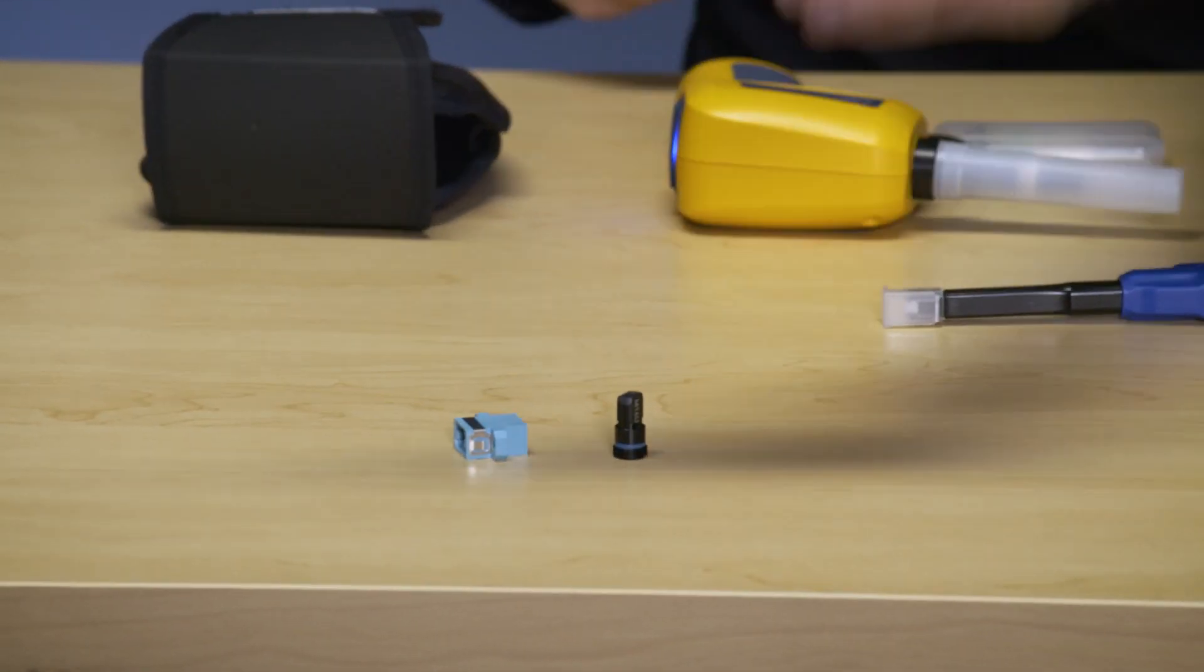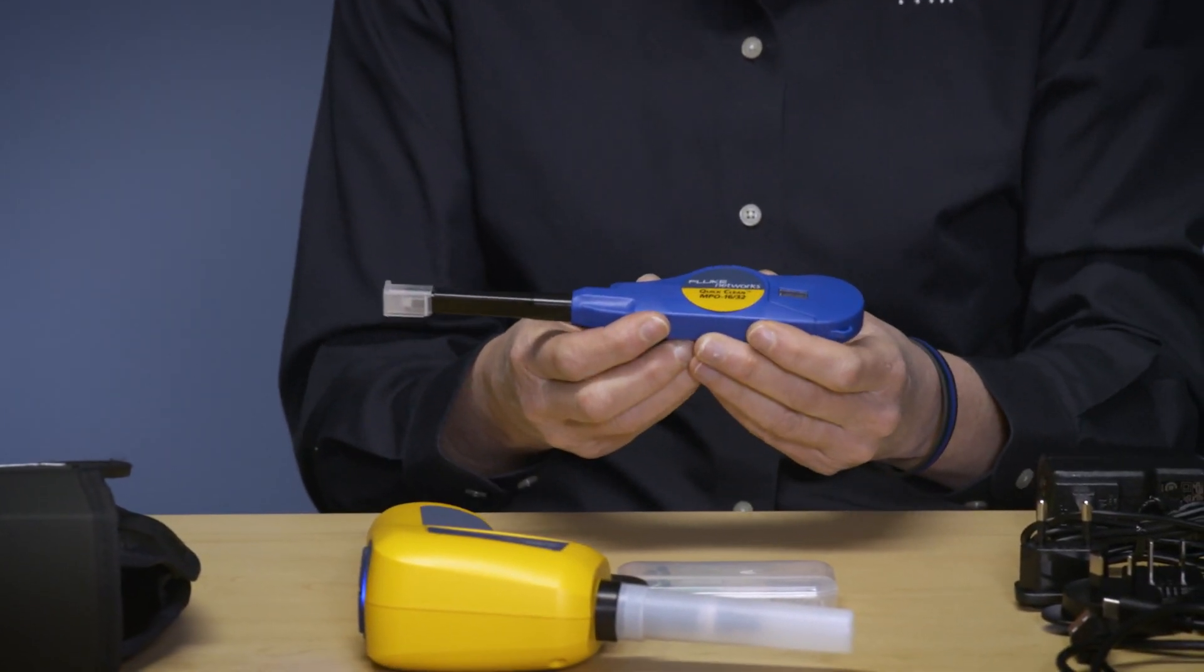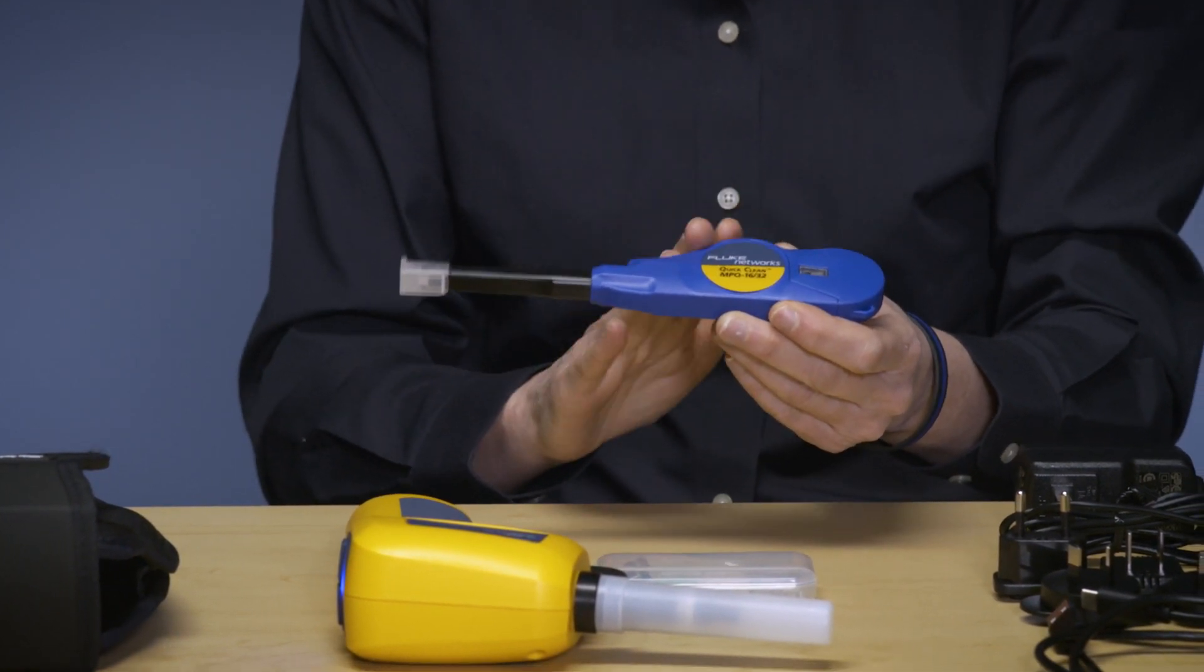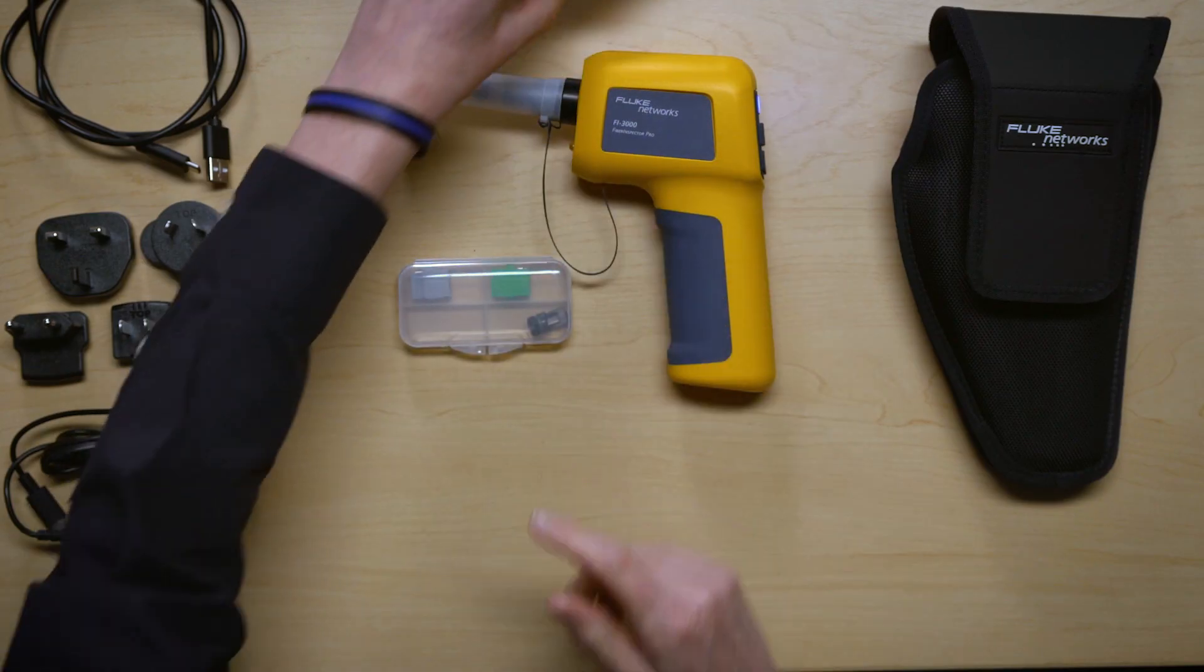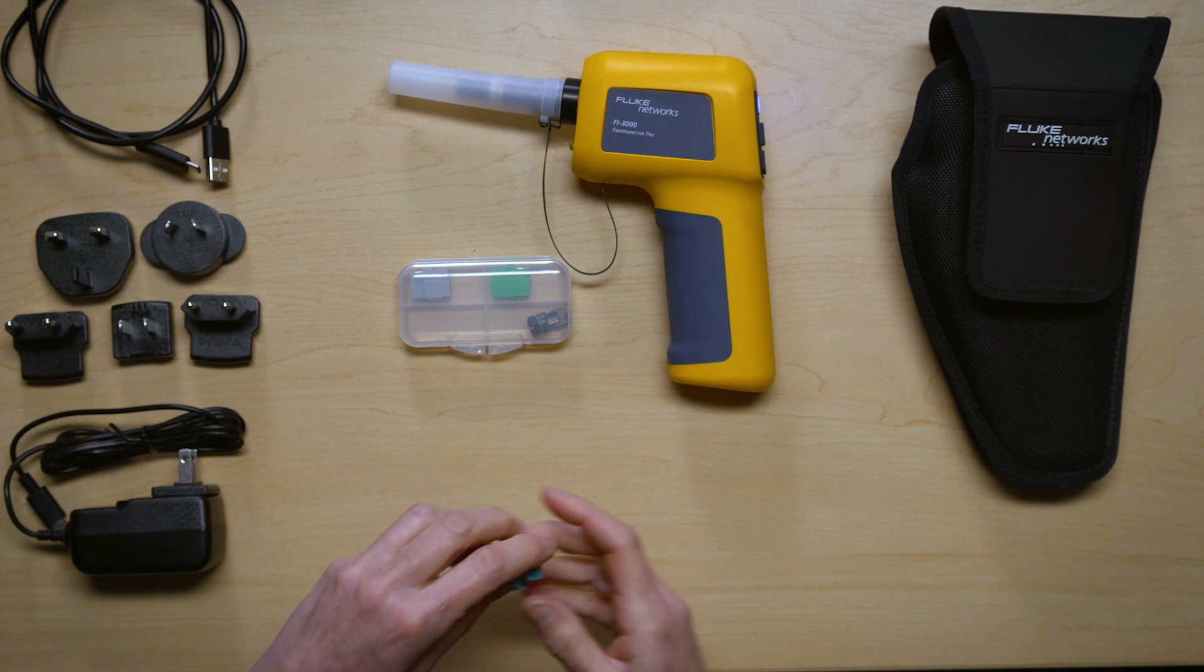I have a second one. This one is for 1632s. So if I have a 1x16 or a 2x16 giving me 32 fibers this is what I'm going to use.